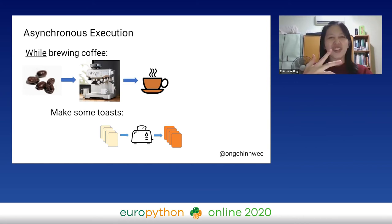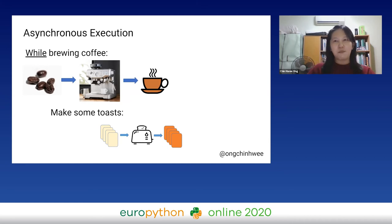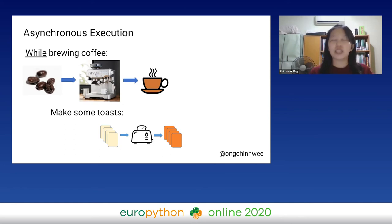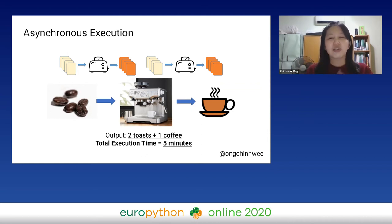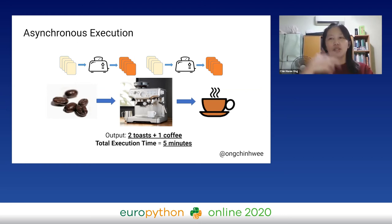But with asynchronous execution, while I brew the coffee — knowing it takes 5 minutes — I will make some toast, which takes 2 minutes each time. If I do this asynchronously, I'm going to take just 5 minutes for the same output. Effectively, the execution time is cut by almost half.